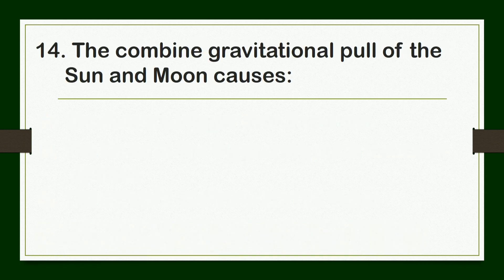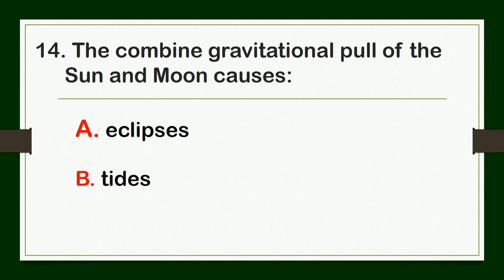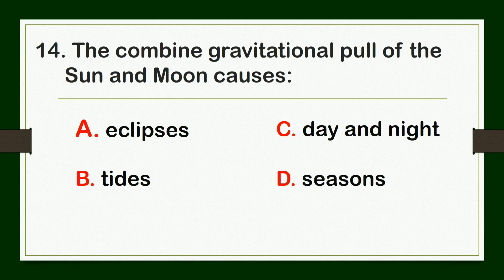The combined gravitational pull of the Sun and Moon causes — A. eclipses, B. tides, C. day and night, or D. seasons.